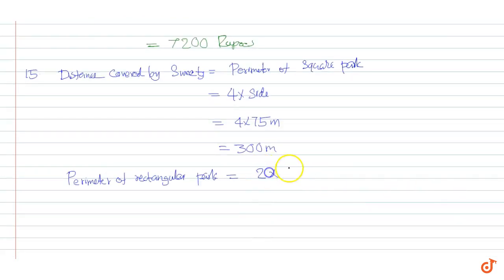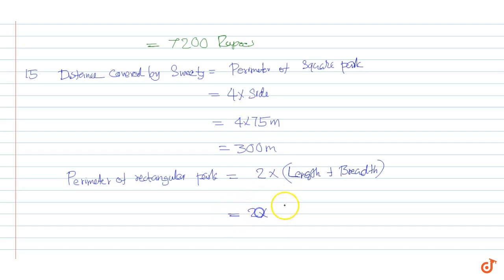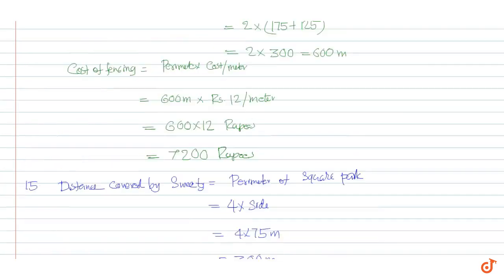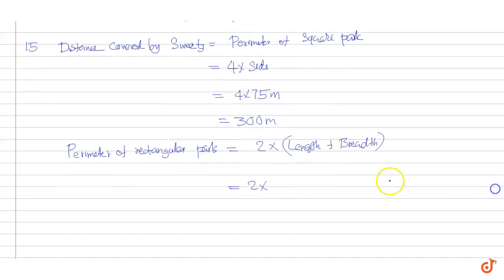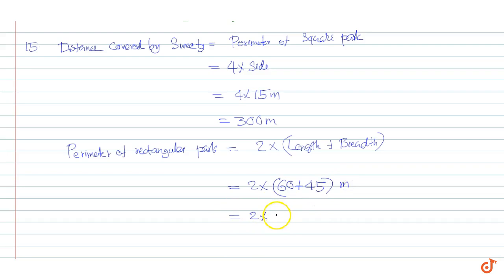Distance covered by Bulbul is equal to the perimeter of the rectangular park, which is 2 into (length plus breadth), equal to 2 into (60 plus 45) meters, equal to 2 into 105 meters, equal to 210 meters.